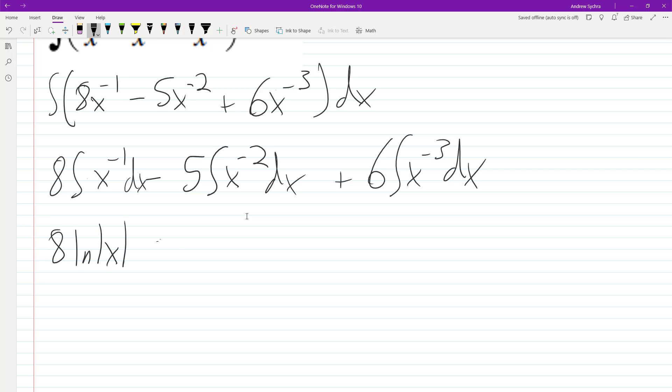Minus 5x, right, and we add 1 to this, negative 1. We'll add 1 to negative 2, and then we get negative 1 on the bottom. Plus 6x raised to the, add 1 to the negative 3. We get negative 2, and then we get negative 2 on the bottom.